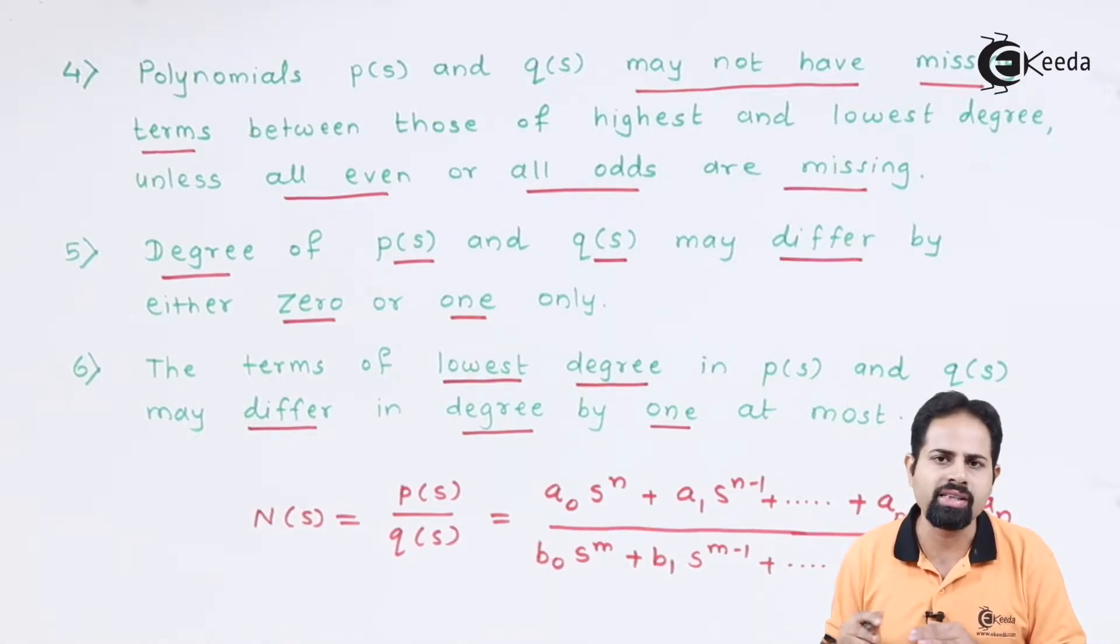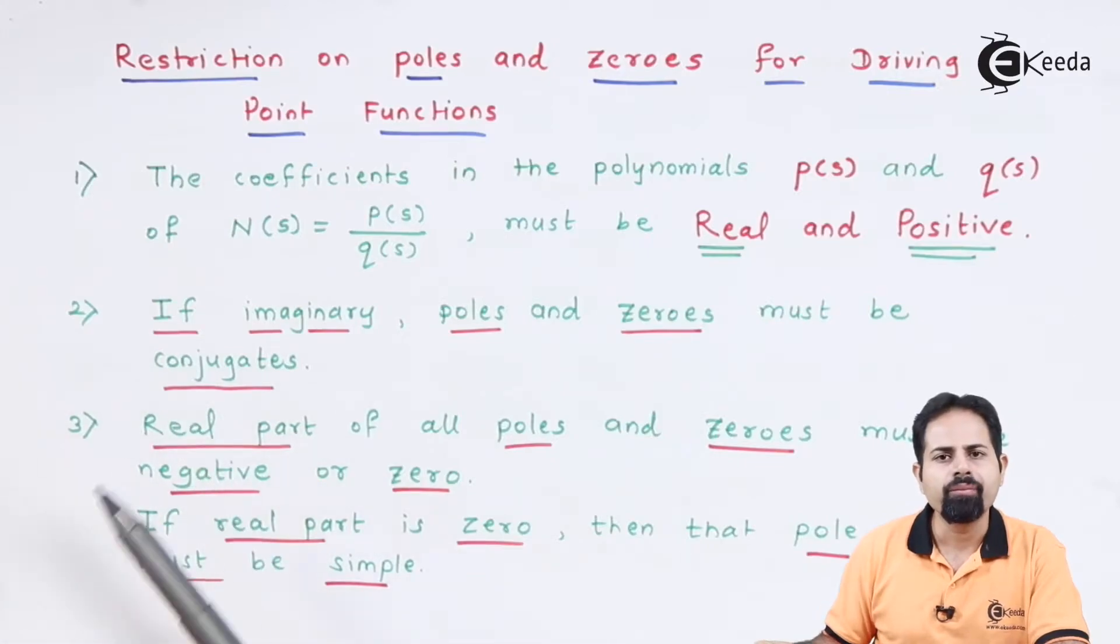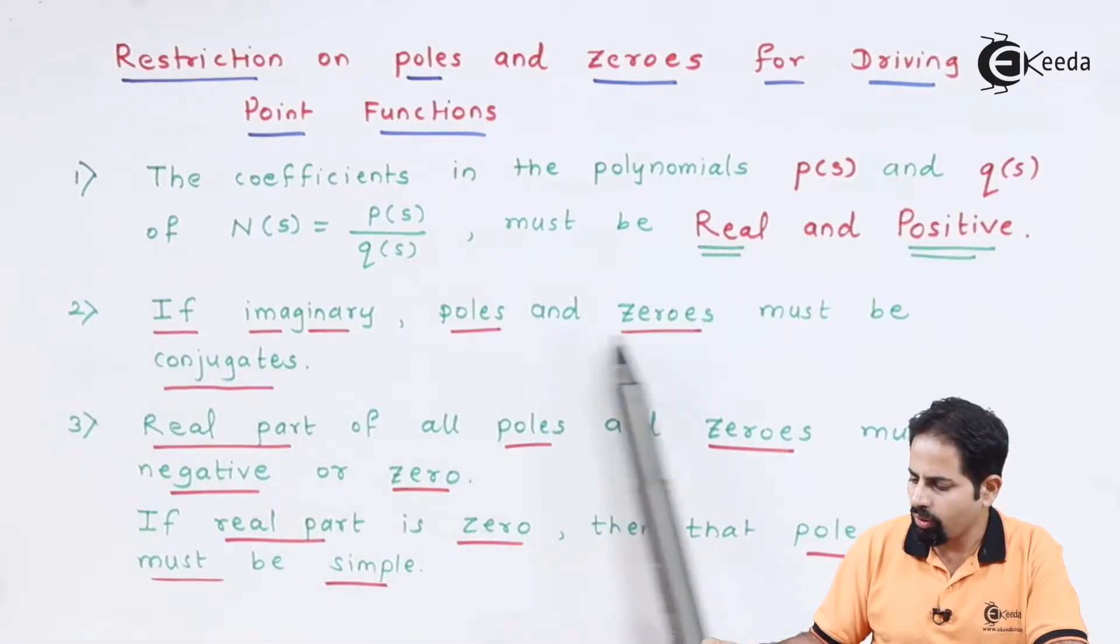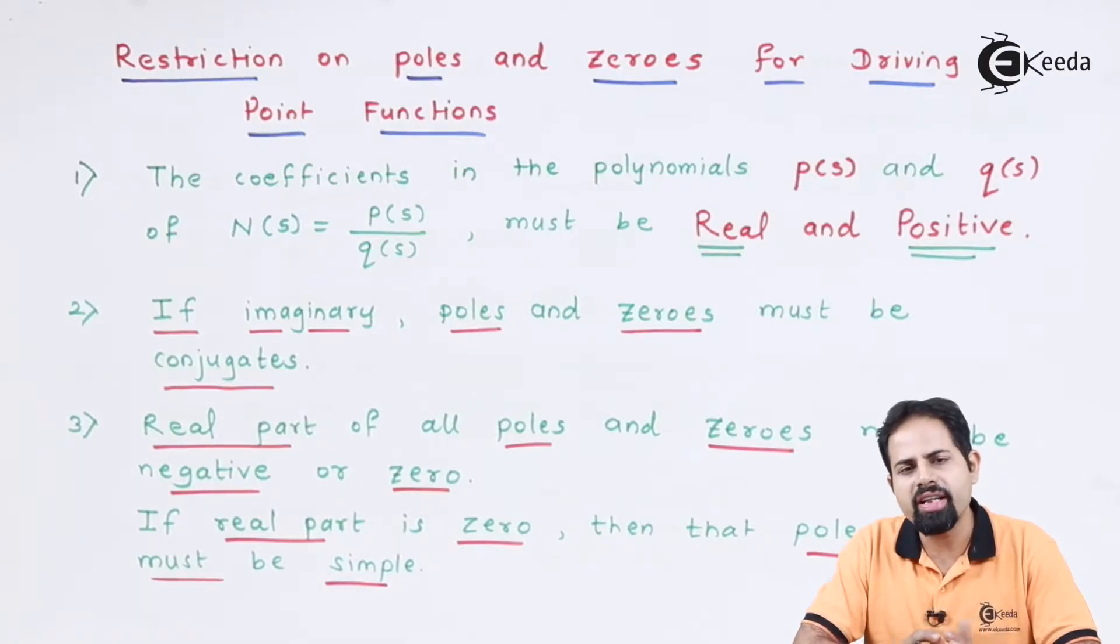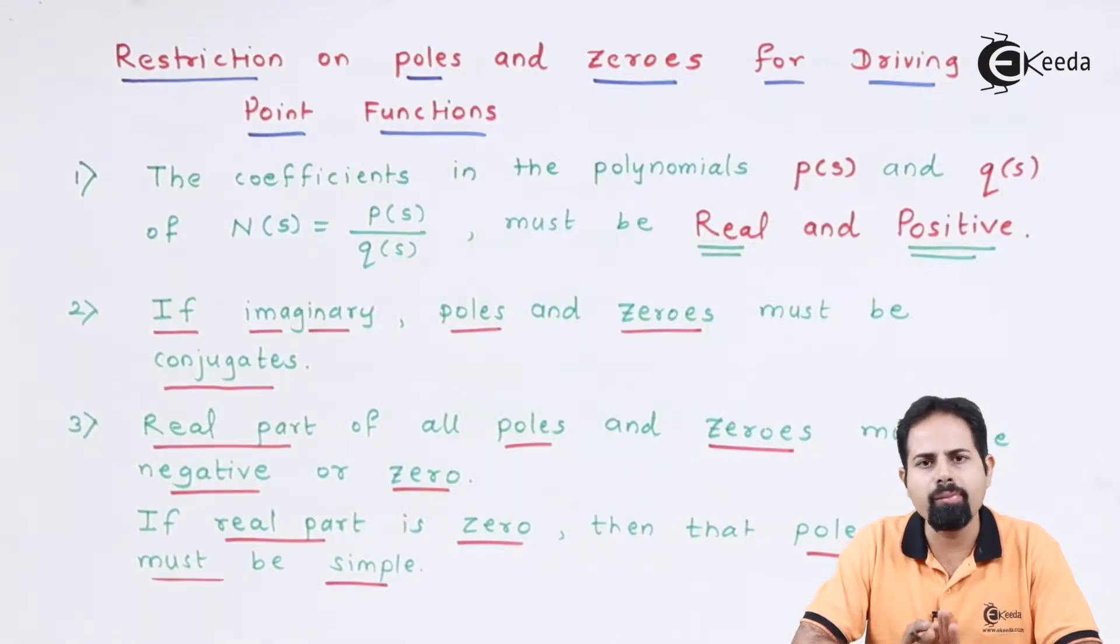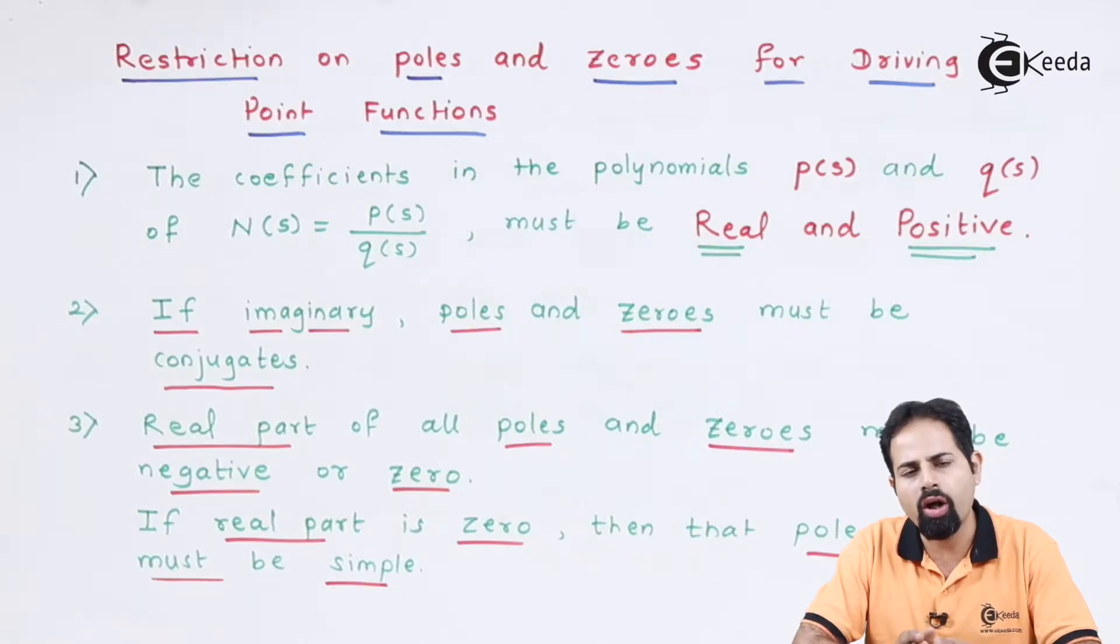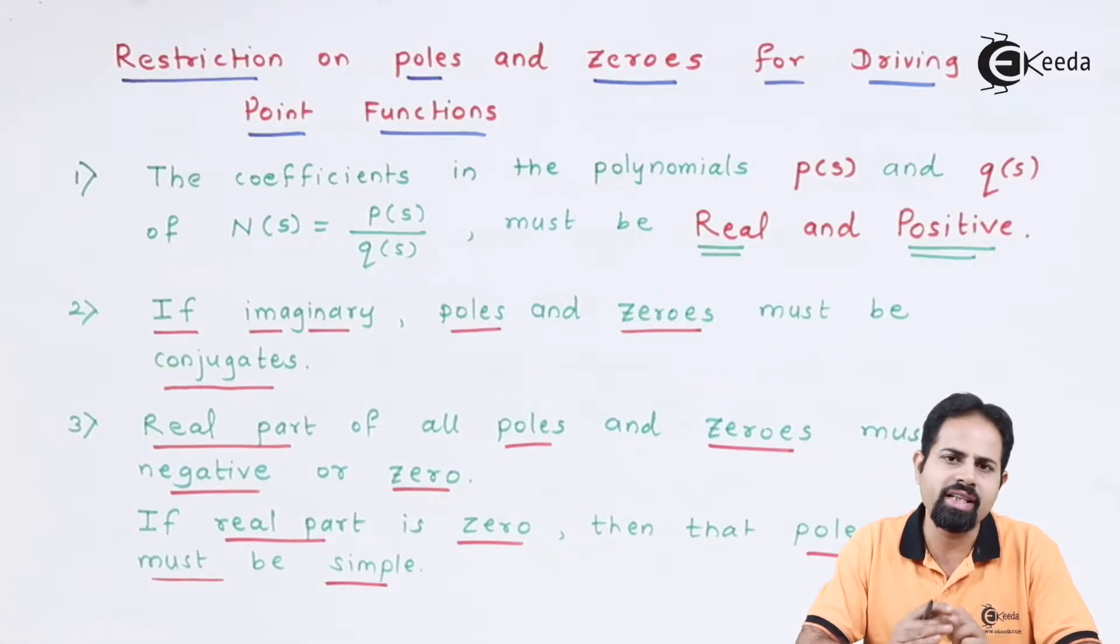Second one is if imaginary, poles and zeros must be conjugates. So even if there is an imaginary zero or imaginary pole, it has to occur in complex conjugates or conjugate pairs. We will see this as an example.